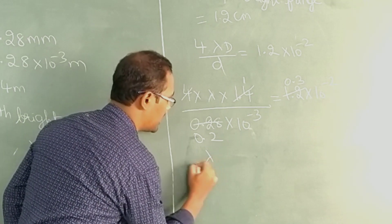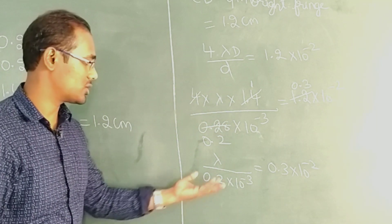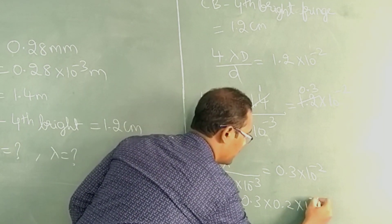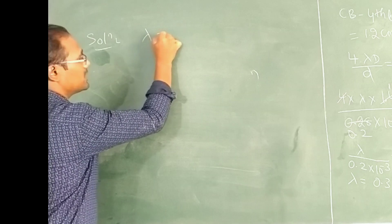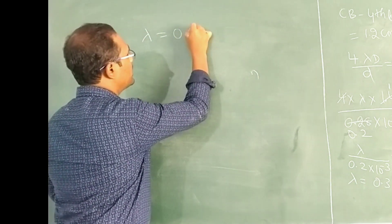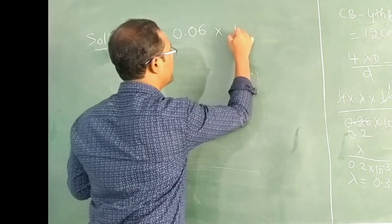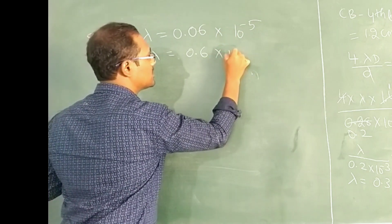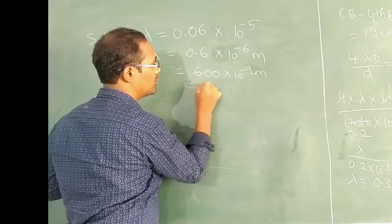Solving for lambda: lambda = 0.3 × 0.2 × 10⁻² × 10⁻³, which gives lambda = 0.06 × 10⁻⁴ = 0.6 × 10⁻⁶ meter. That is 0.6 micrometer, or equivalently 600 nanometer. Both are correct.